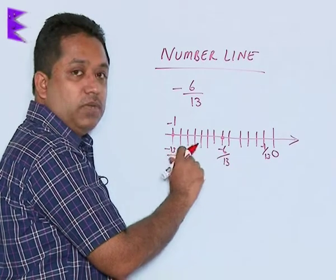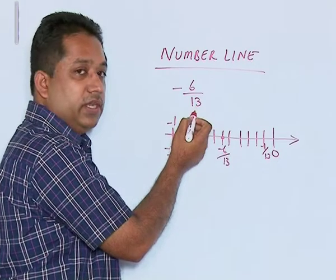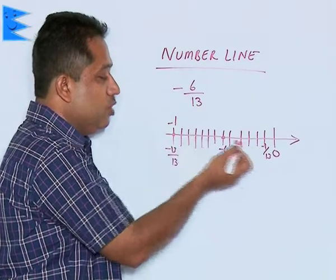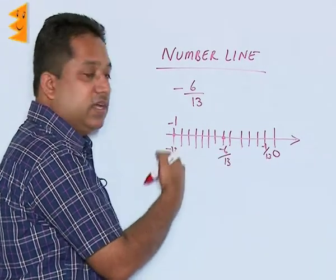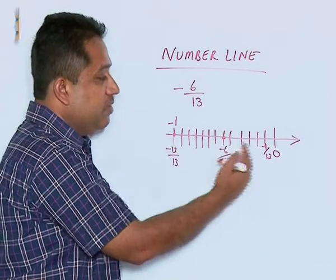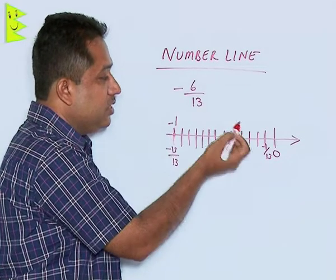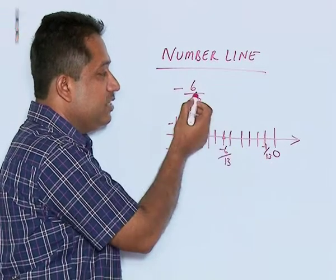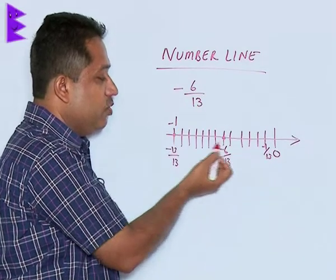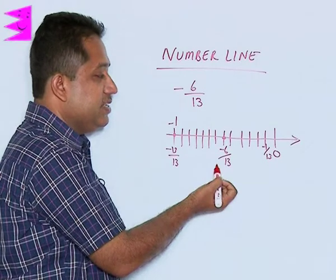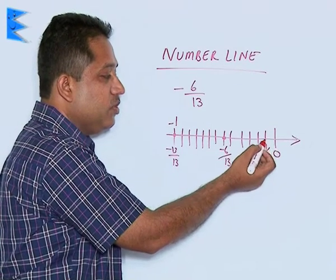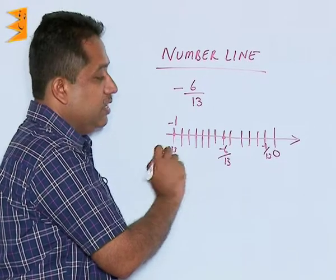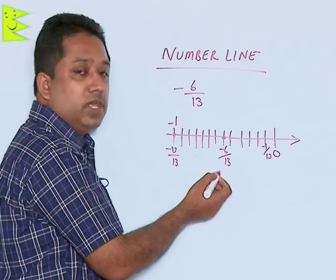Whether it is positive or negative numbers, the denominator is the key — it indicates the number of parts into which we divide the space between 0 and the next integer. Once divided, the numerator indicates which division to mark. For minus 6 by 13, we divide into 13 portions and count the sixth part from 0: 1, 2, 3, 4, 5, and 6 — giving us minus 6 by 13. This is the way to represent all rational numbers on the number line.